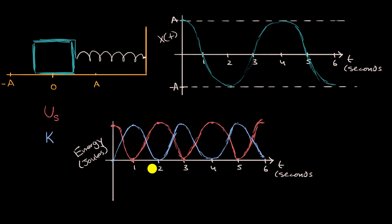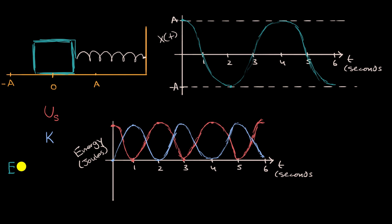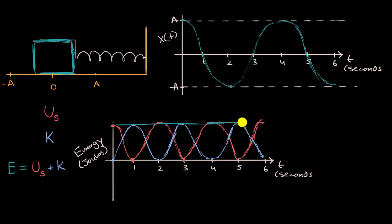When we first introduced the law of conservation of energy, we saw that in a closed system with no dissipative forces and no energy added or removed, mechanical energy is conserved. The total mechanical energy E equals elastic potential energy plus kinetic energy, and this should be constant. If at any point in time you add the two curves together, you get a constant line — that is the graph of our total mechanical energy.